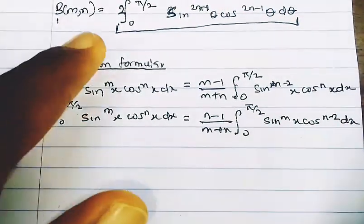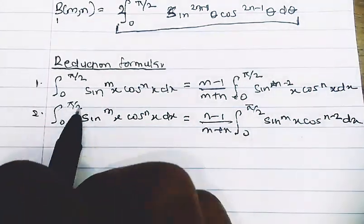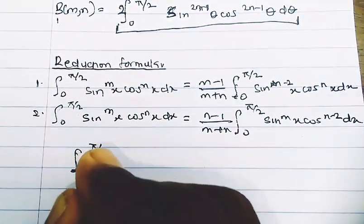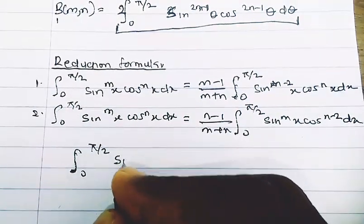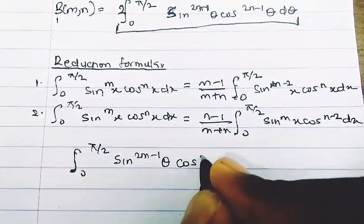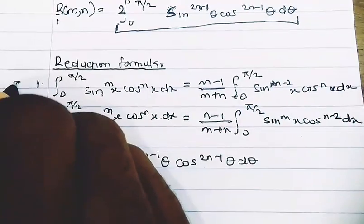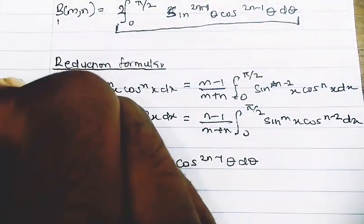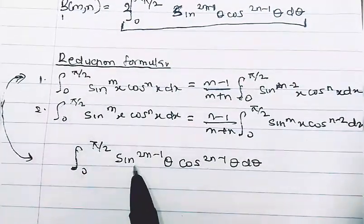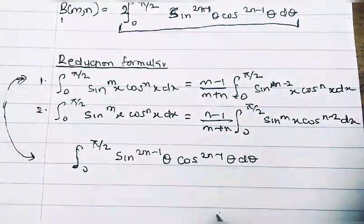We are going to make use of just this integral, leaving out the constant two. So our integral is from zero to pi/2 of sine^(2m-1)(theta) cos^(2n-1)(theta) d-theta. I'm going to apply the first reduction formula, replacing m with (2m-1) and n with (2n-1).